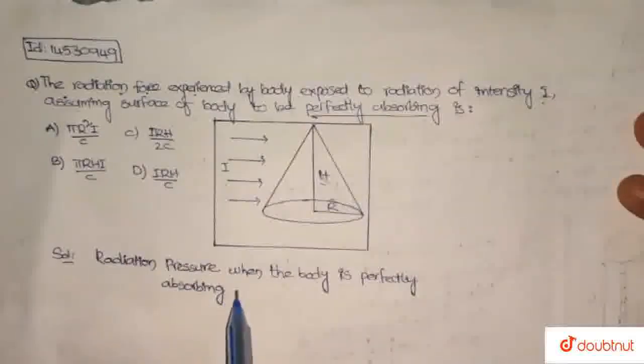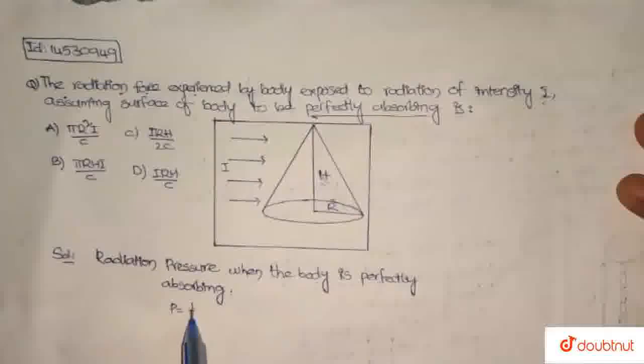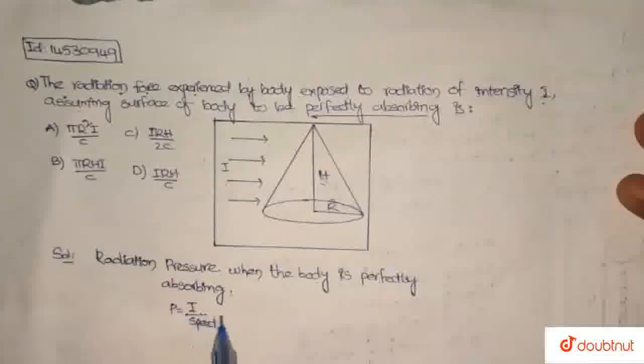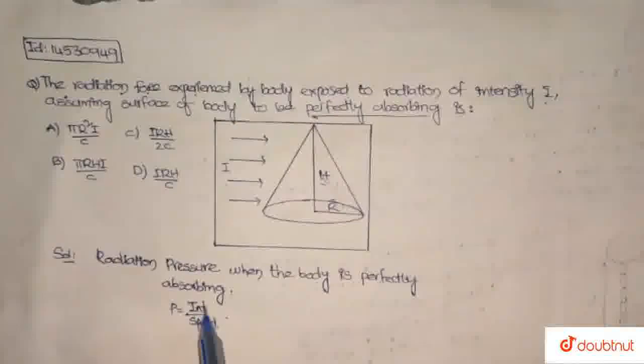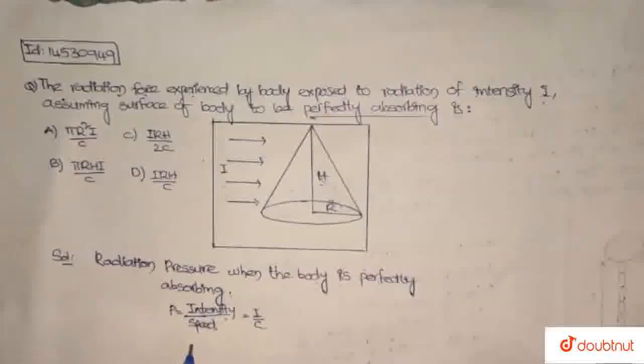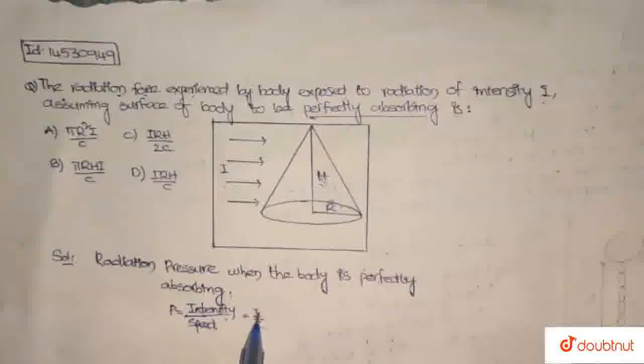So P equals intensity upon speed of light, I by C. When the body is perfectly absorbing, the radiation pressure P equals I by C.